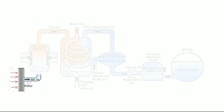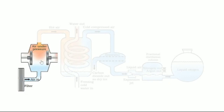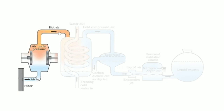Once the filter absorbs all the moisture and dust, this dry air is allowed to pass and it reaches a chamber called a compressor. Here the air is compressed under very high pressure. Whenever air is compressed under pressure, the temperature increases — pressure is directly proportional to temperature.